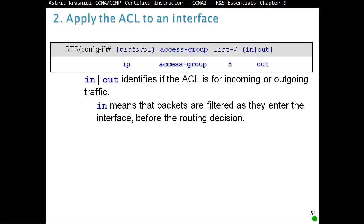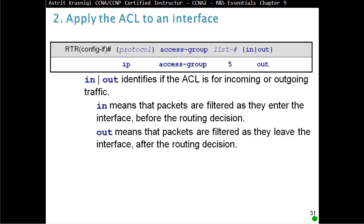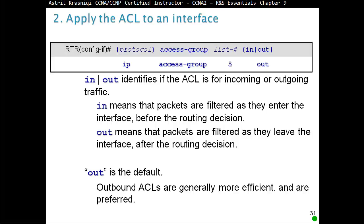'In' means the packets are filtered as they enter the interface, before the routing decision. 'Out' means the packets are filtered as they leave the interface, after the routing decision. Out is the default, so if you didn't enter anything it will default to out. Outbound ACLs are generally more efficient and more preferred. Inbound ACLs must check every packet.